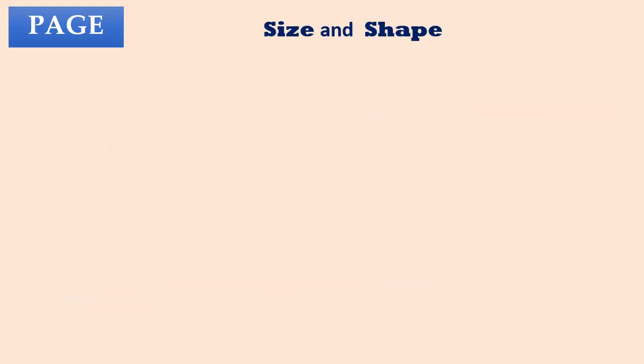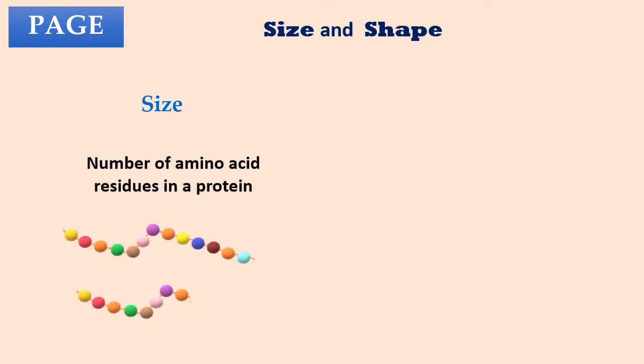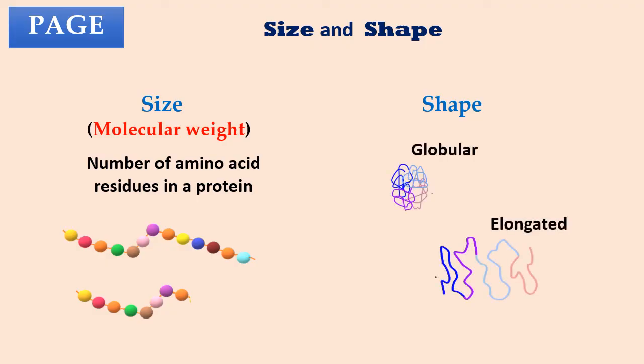Now let's talk about size and shape of protein molecules. We know proteins are of different sizes. Size is due to the number of amino acid residues in the protein molecule. This also means larger the size, higher will be its molecular weight. Talking about the shapes of protein molecules, they exist in various forms such as globular, elongated, etc. And this depends on their ability to form primary, secondary, tertiary and quaternary structures.